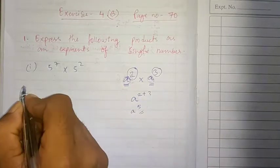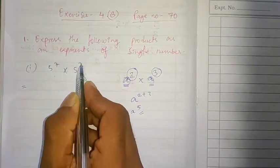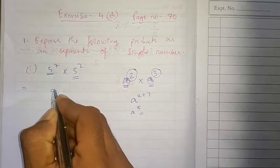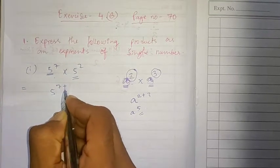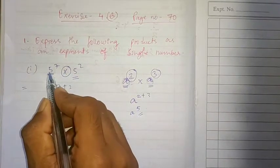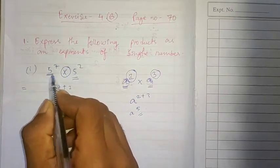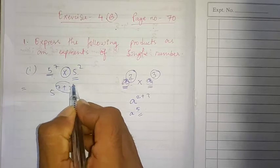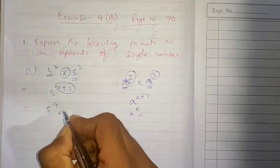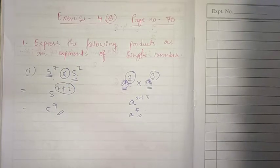Similarly we will do this question. You can see here, 5 raised to 7 multiplied by 5 raised to 2. The bases are same, so the power is added only when it is multiplication. When two numbers with same base are multiplied, the power will be added. So you get 5 raised to 9, because 7 plus 2 is 9.